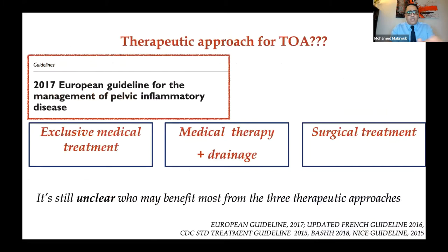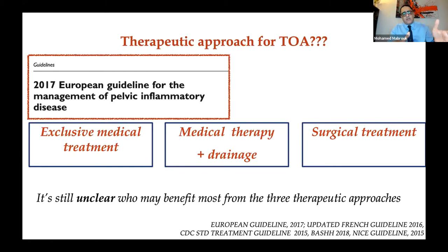According to the European guidelines for PID, there are three treatment categories: medical treatment alone, medical treatment followed by drainage, or surgical management. We begin with medical treatment; if it progresses well on follow-up we continue. If not progressing well, we may perform ultrasound or image-guided drainage. If drainage is not appropriate for the patient, we proceed directly to surgery.